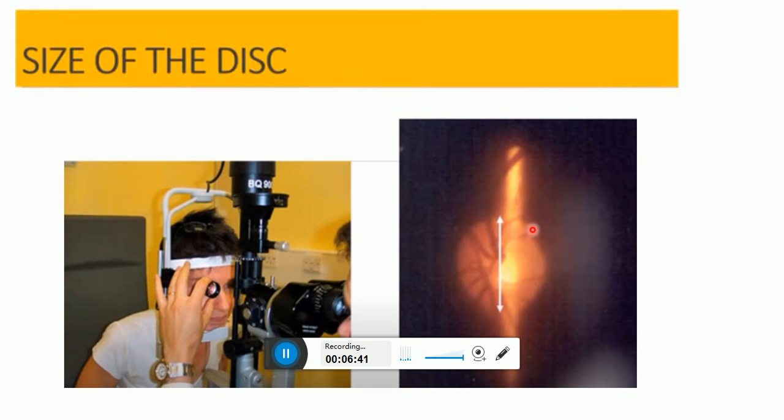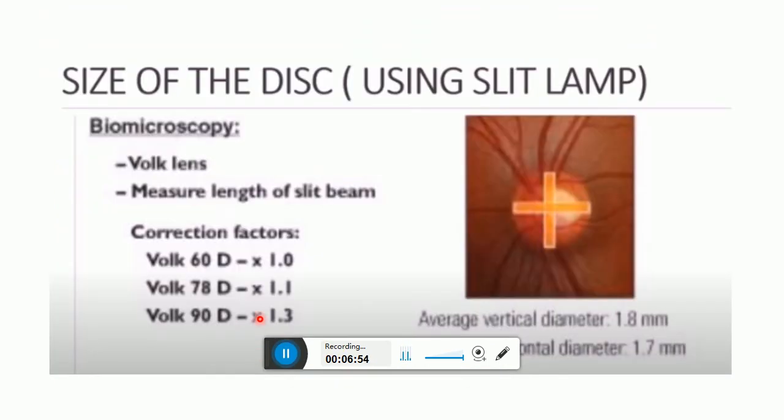The size and shape of the optic disc is determined by comparing it with the size of the slit beam. The correction factor is then applied. The correction factor for Volk 60 diopter lens is 1, for 78 diopter multiply it by 1.1, for 90 diopter multiply it by 1.3.